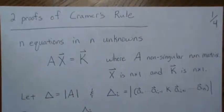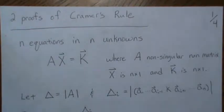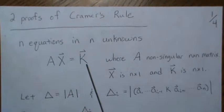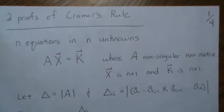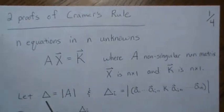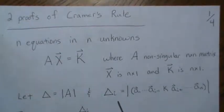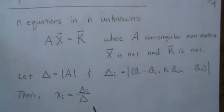In this video we're going to show two proofs of Cramer's Rule, which is basically solving a system of n equations in n unknowns. You can write that in matrix form where x and k are vectors and A is an n-by-n non-singular matrix. We let delta equal the determinant of A, and delta sub i be the determinant of A but with the ith column replaced by k. Then each x_i can be solved as this ratio of determinants.